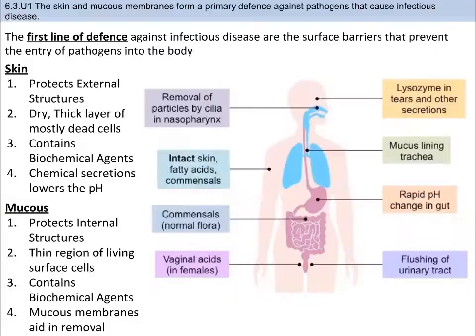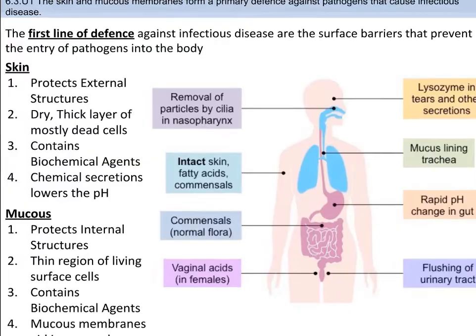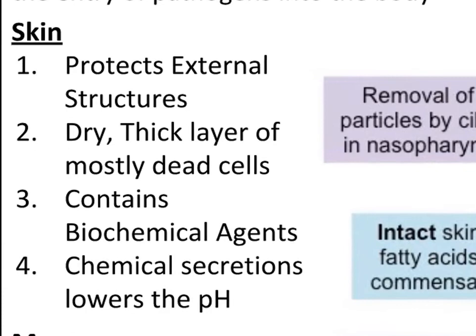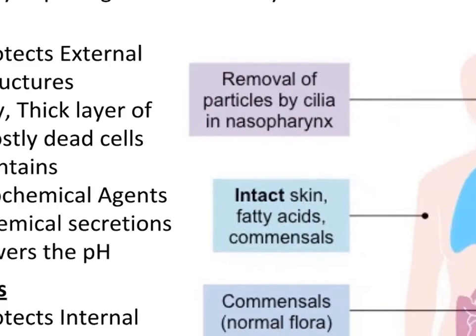The first line of defense against infectious diseases are the surface barriers that simply exist to prevent outside things from getting into the body. The skin is the outermost layer of our body and consists of a dry, thick layer of mostly dead cells. This is important, as many pathogens require moist conditions in order to survive and thrive. Additionally, our sebaceous glands secrete chemicals and enzymes which inhibit microbial growth on skin. The skin also secretes lactic acid and fatty acids to lower the pH to 5.6 to 6.4, depending on the area of the body. This acidic condition also prevents some pathogens from surviving.